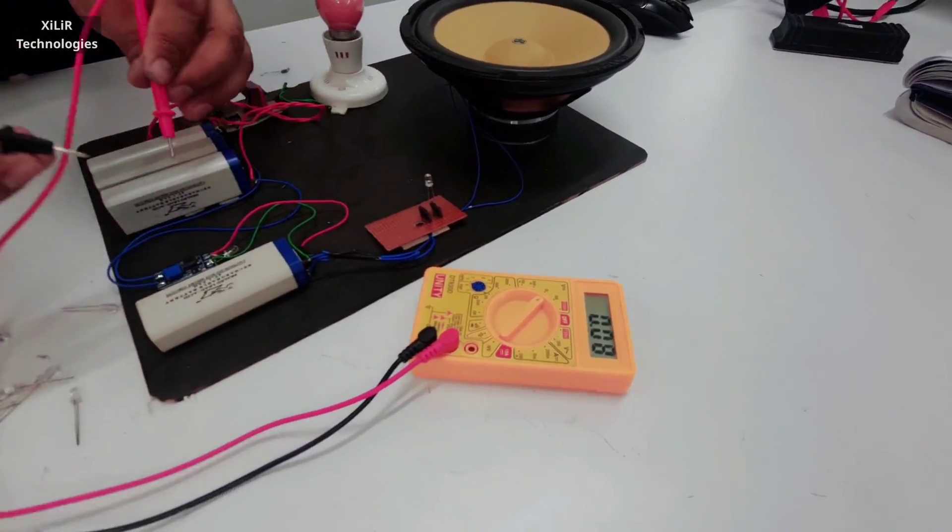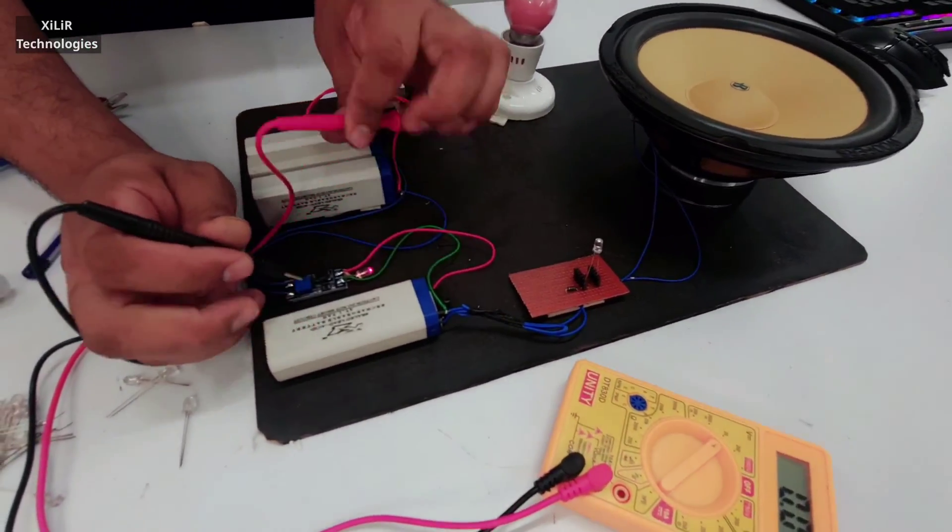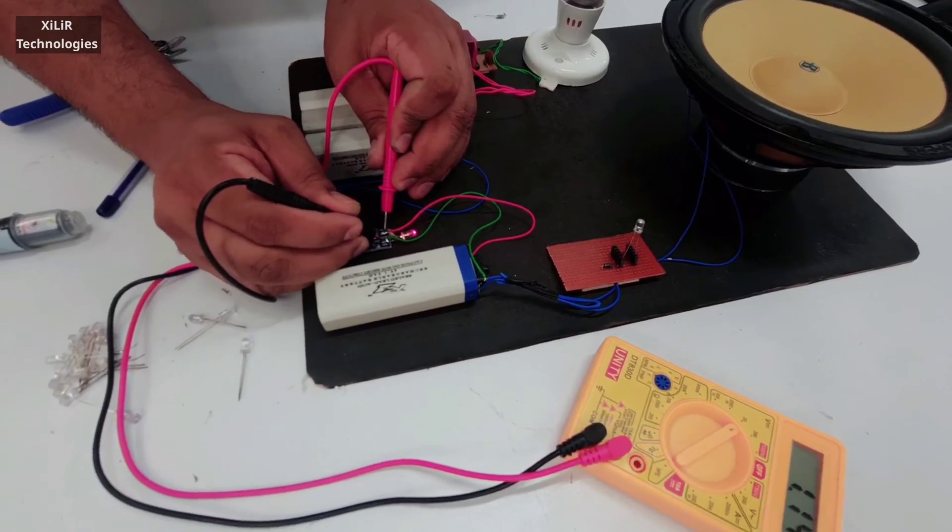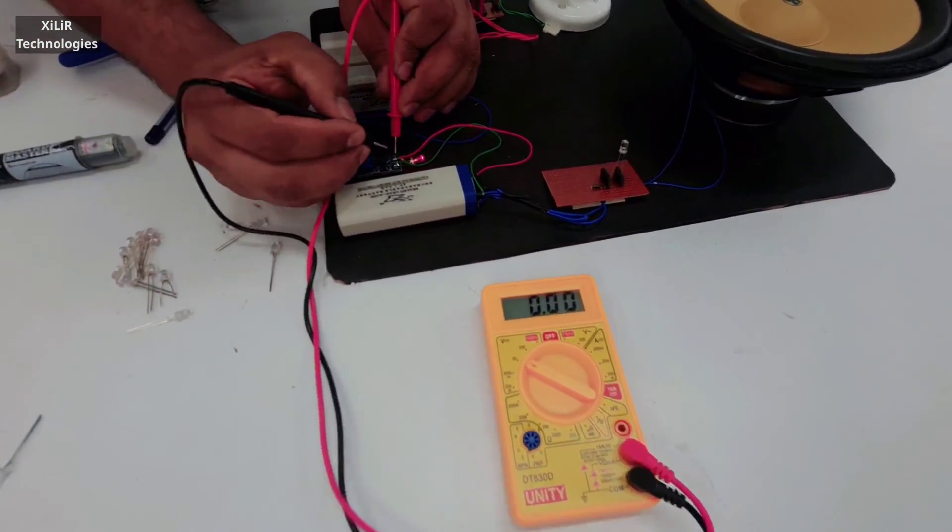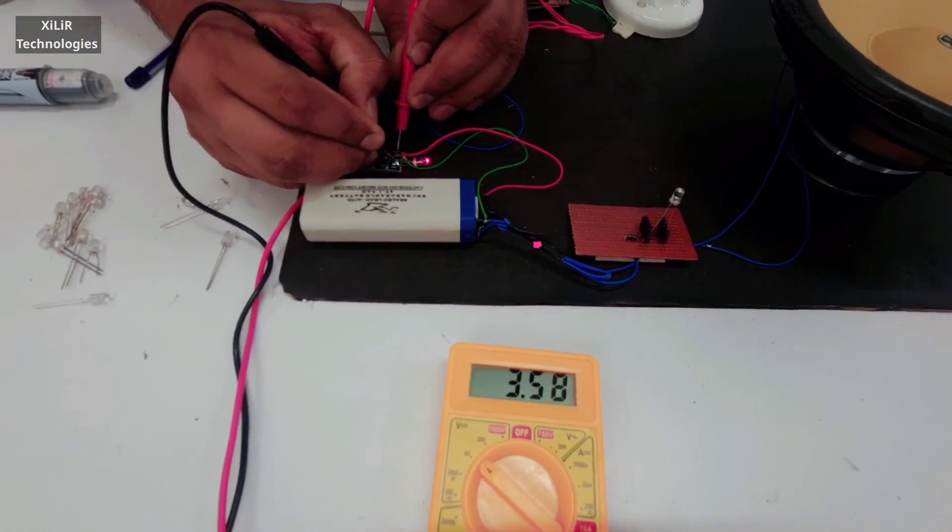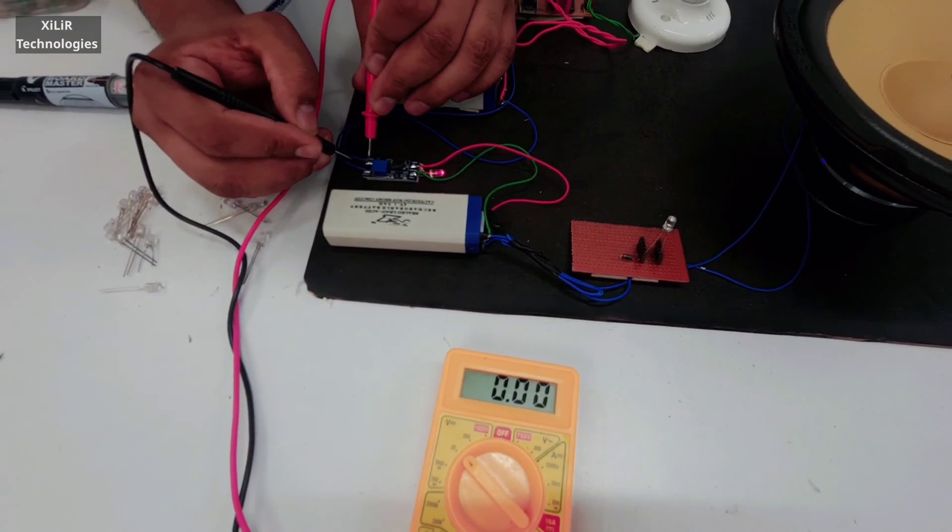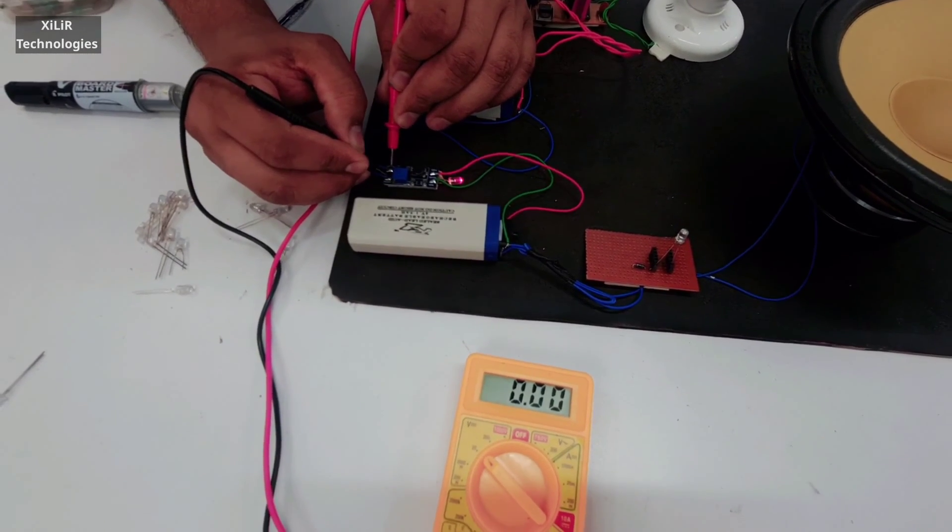After that we will come to this point. When we turn on this light we will get voltage here which is again of 3.57. After that this point, this is because of load.